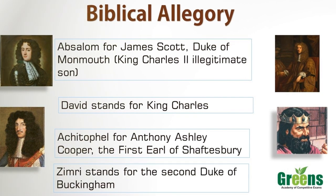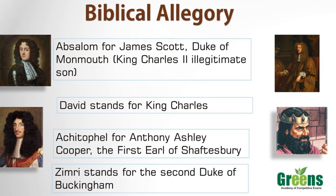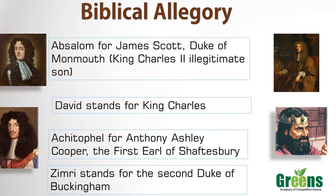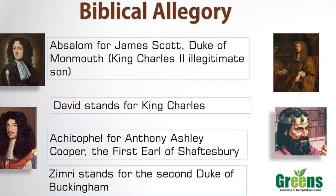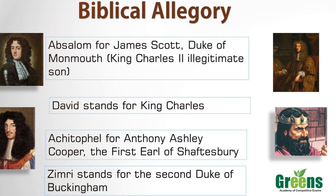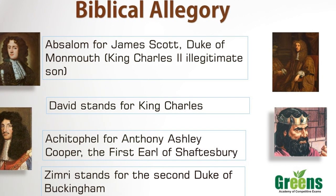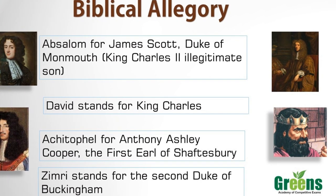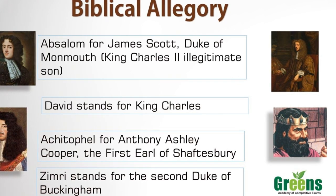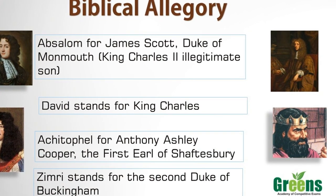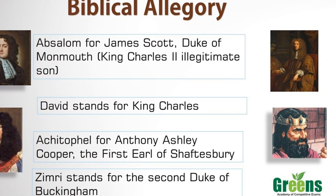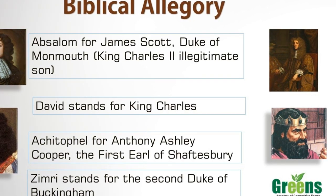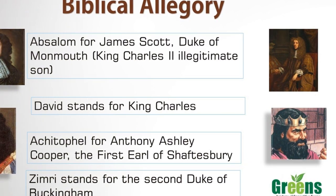Now let's understand the religious allegory used in this poem. Absalom represents James Scott, the Duke of Monmouth, King Charles II's illegitimate son. King David stands for King Charles II. The evil counsellor Achitophel represents the Earl of Shaftesbury. Lastly, Zimri stands for the second Duke of Buckingham.